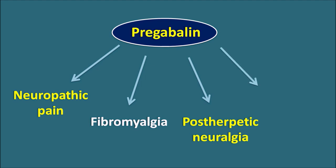This drug can also be used in the treatment of focal seizures, that is partial seizures, so it can be used as an anticonvulsant. In this way, pregabalin is both an analgesic and an anticonvulsant. Apart from these clinical uses, it can also be used off-label in the treatment of generalized anxiety disorder.